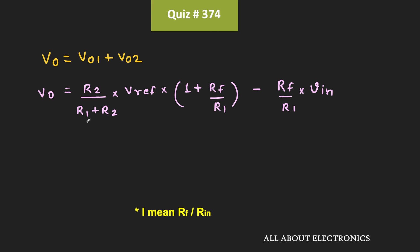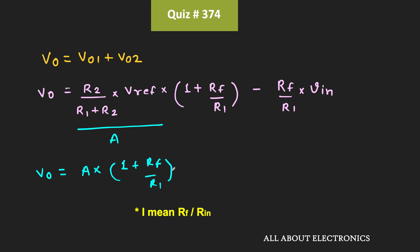In this expression, the term involving R1, R2, and Vreference is constant since all those values are fixed. Let's call this constant 'a'. So the output voltage Vout equals a times (1 plus Rf divided by Rin) minus (Rf divided by Rin) times Vin. Using the given conditions, let us now find the ratio of Rf to Rin.